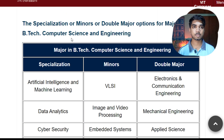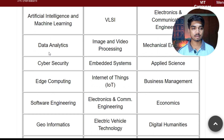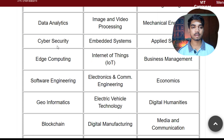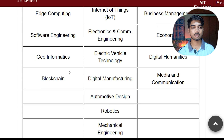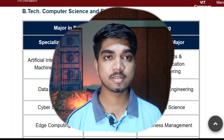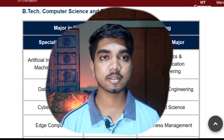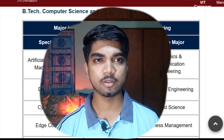Now we will be looking at a few options of specialization, minor, and double majors in Computer Science and Engineering. Here you can look - the specialization options are AI and ML, Data Analytics, Cyber Security, Edge Computing, Software Engineering, Geo Information, and Blockchain. These are the specialization options in CSE. If you have a doubt between CSE core versus CSE specialization, I made a video so check it out on iTap or in the video description.